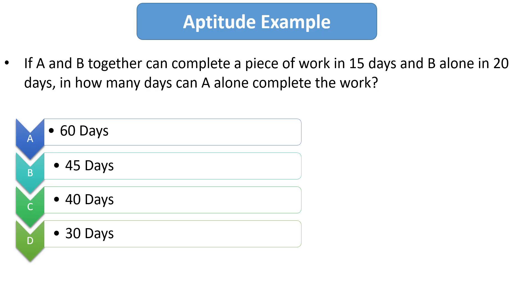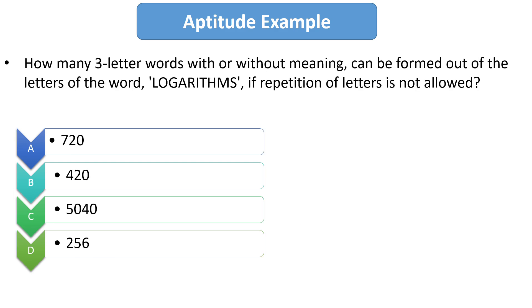The second question from aptitude is how many three letter words with or without meaning can be formed out of the letters of the word logarithms if repetition of the letters is not allowed. So here one important thing is that the repetition of letters is not allowed and we have to find the number of words that we can find with the word logarithms and it is not necessary that the word should have any meaning.